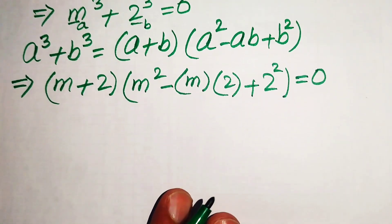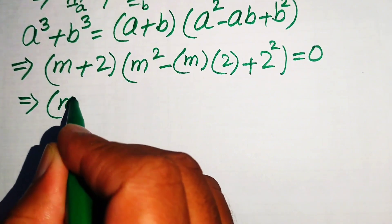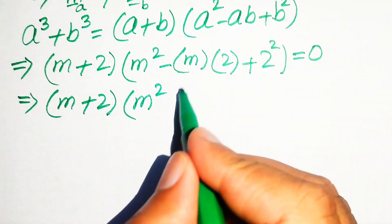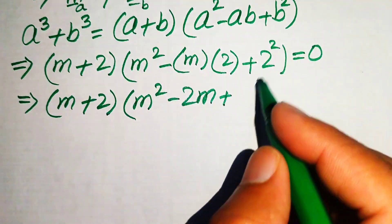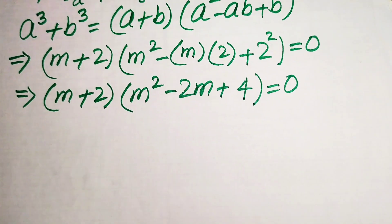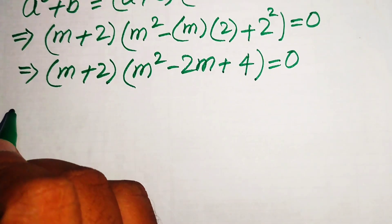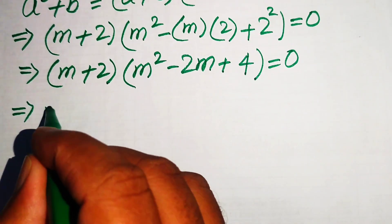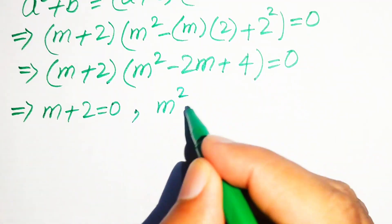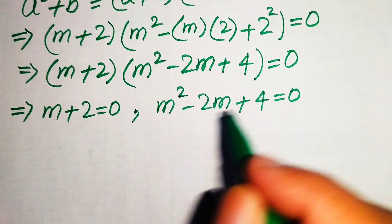We simplify the second factor a little. We have (m plus 2) times (m squared minus 2m plus 4) equals 0, since 2 squared equals 4. Now we convert this into two cases: the first case is m plus 2 equals 0, and the second case is m squared minus 2m plus 4 equals 0.